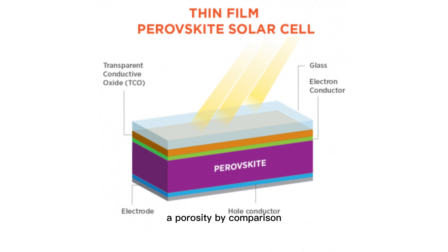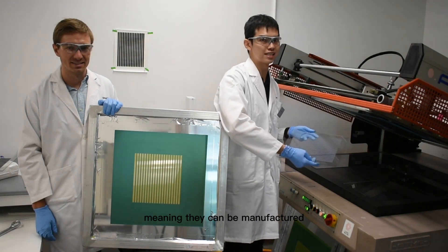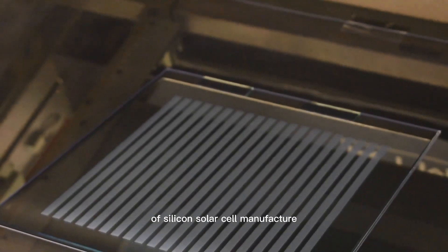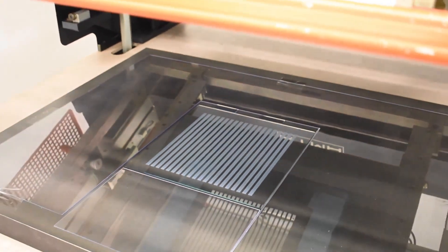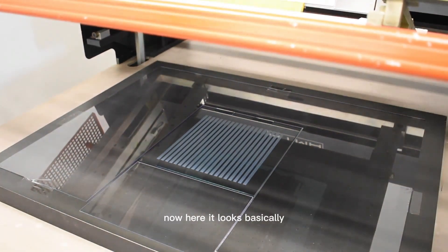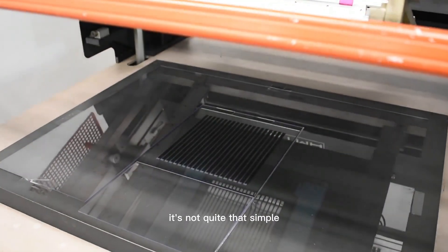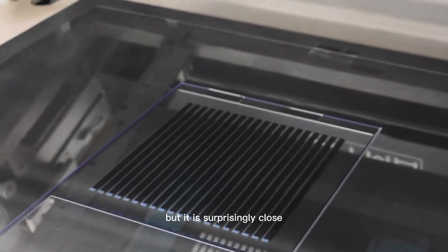A perovskite, by comparison, can be deposited as a thin film on a substrate layer, meaning they can be manufactured using simple techniques like screen printing for a fraction of the cost and energy of silicon solar cell manufacture. Here it looks basically like they're screen printing t-shirts. It's not quite that simple, but it is surprisingly close.